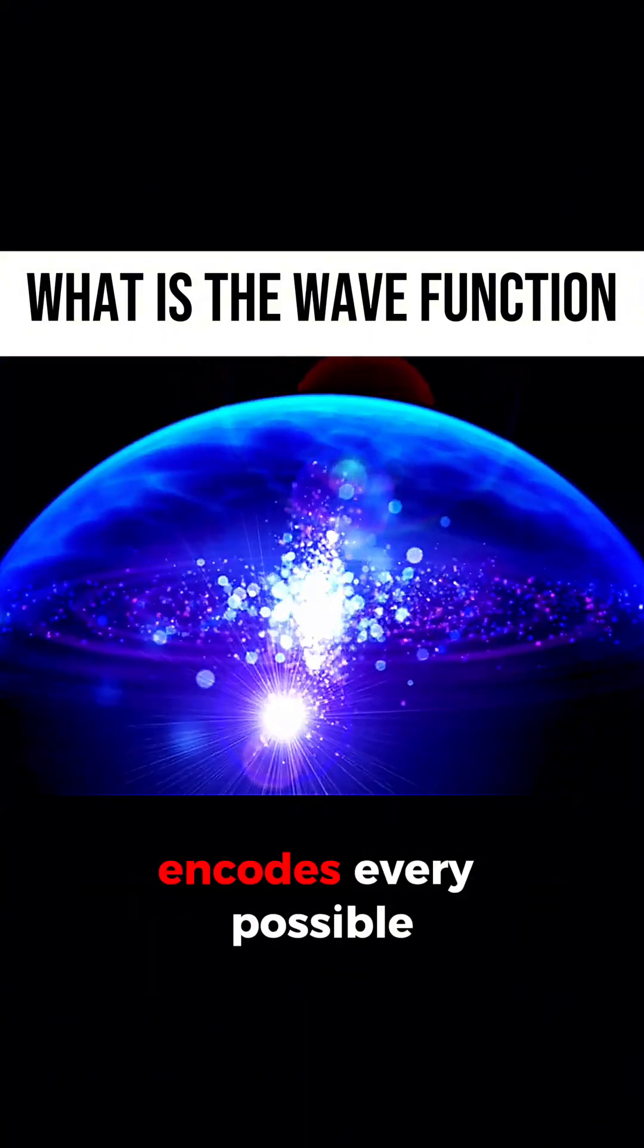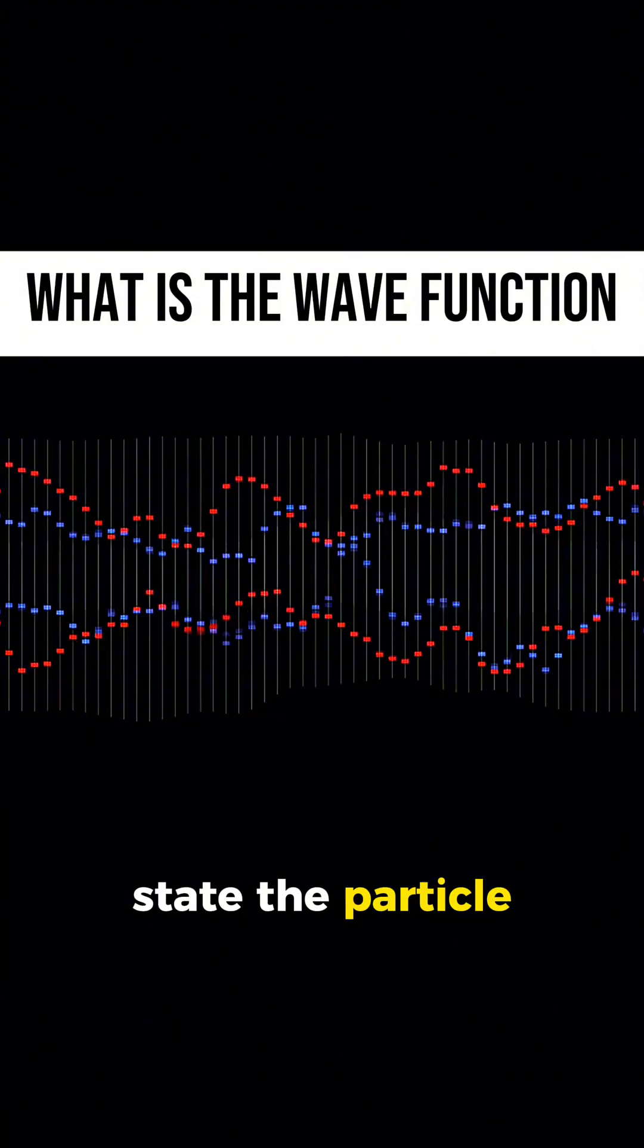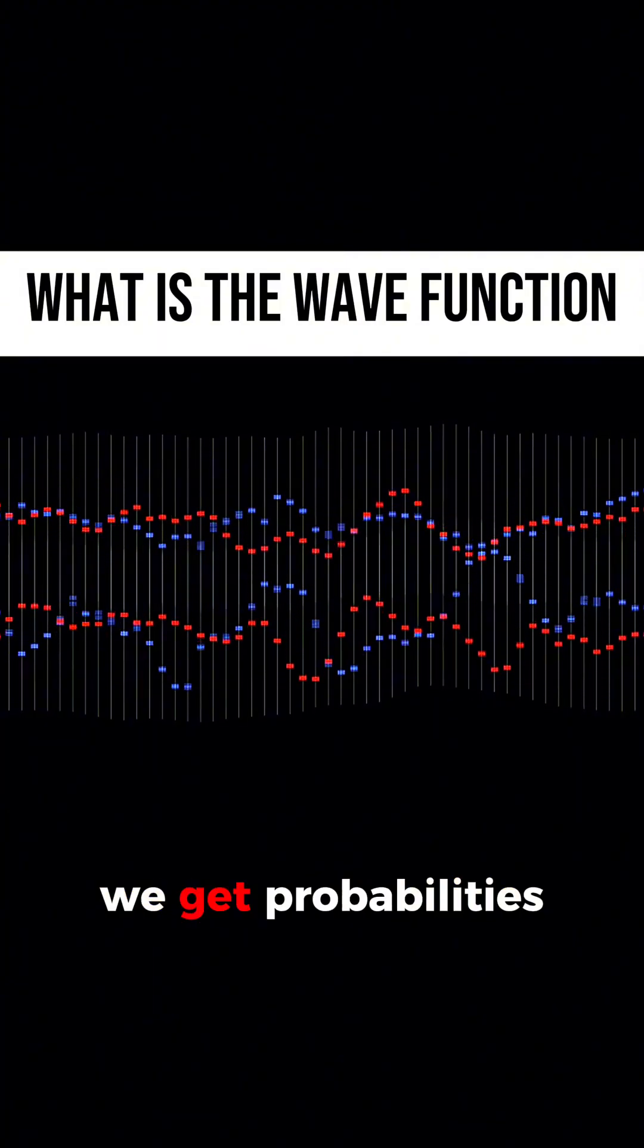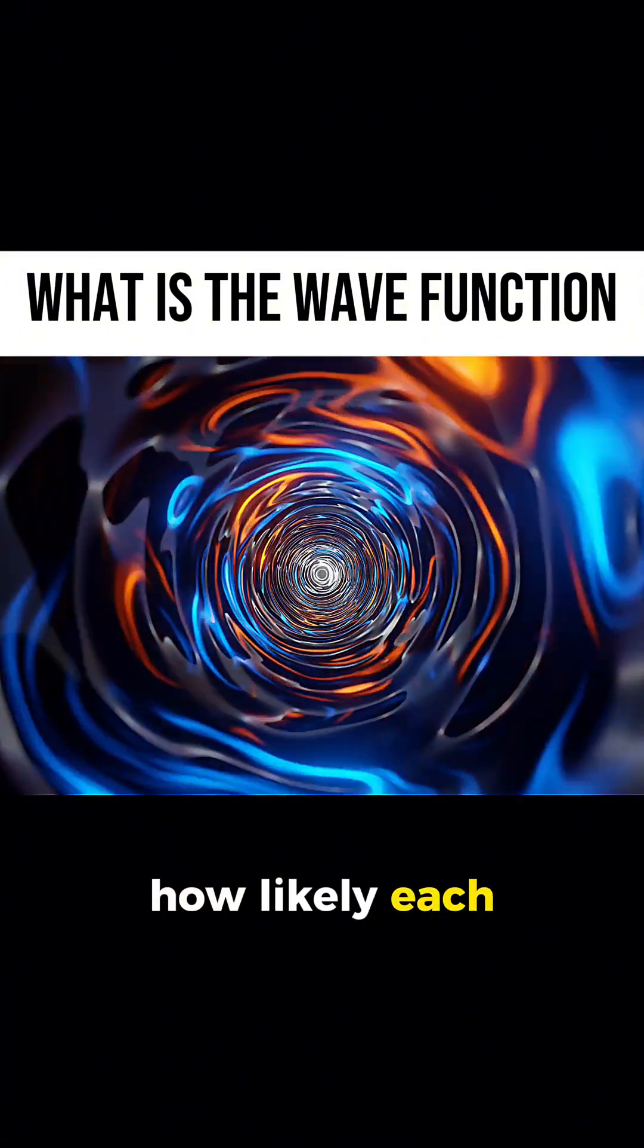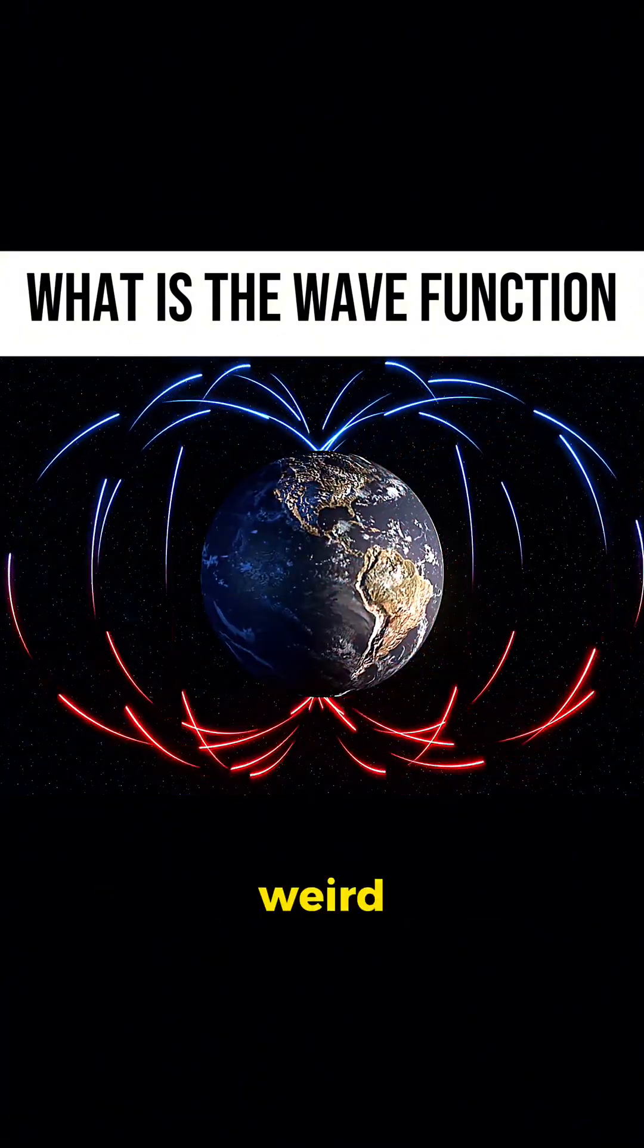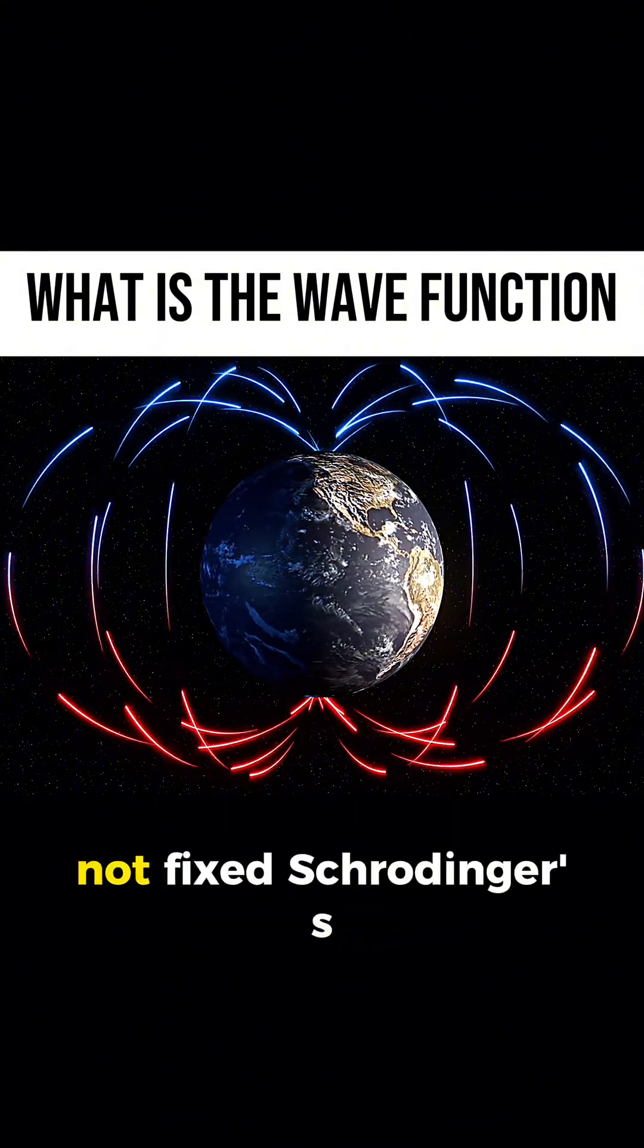The wave function encodes every possible state the particle or atom could be in. When we square the wave function, we get probabilities that tell us how likely each outcome is. That's why quantum mechanics looks so weird. Outcomes are probabilistic, not fixed.